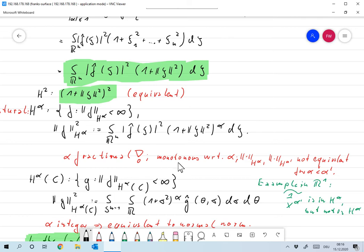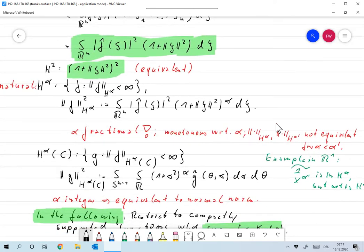We also realize that this is monotonous with respect to alpha so it becomes bigger when we choose alpha larger, and we also note that H^alpha and H^alpha prime are not equivalent. The norms are not equivalent for alpha smaller than alpha prime because you can easily find functions where this one is bounded but this one is unbounded.